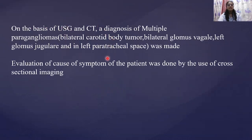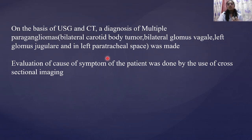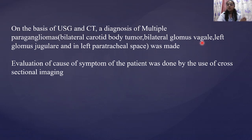On the basis of USG and CT, the diagnosis of multiple paragangliomas was established. In this single patient we could see almost every type of head and neck paraganglioma: bilateral carotid body tumors, bilateral glomus vagale, left glomus jugulare, and a left paratracheal space tumor.